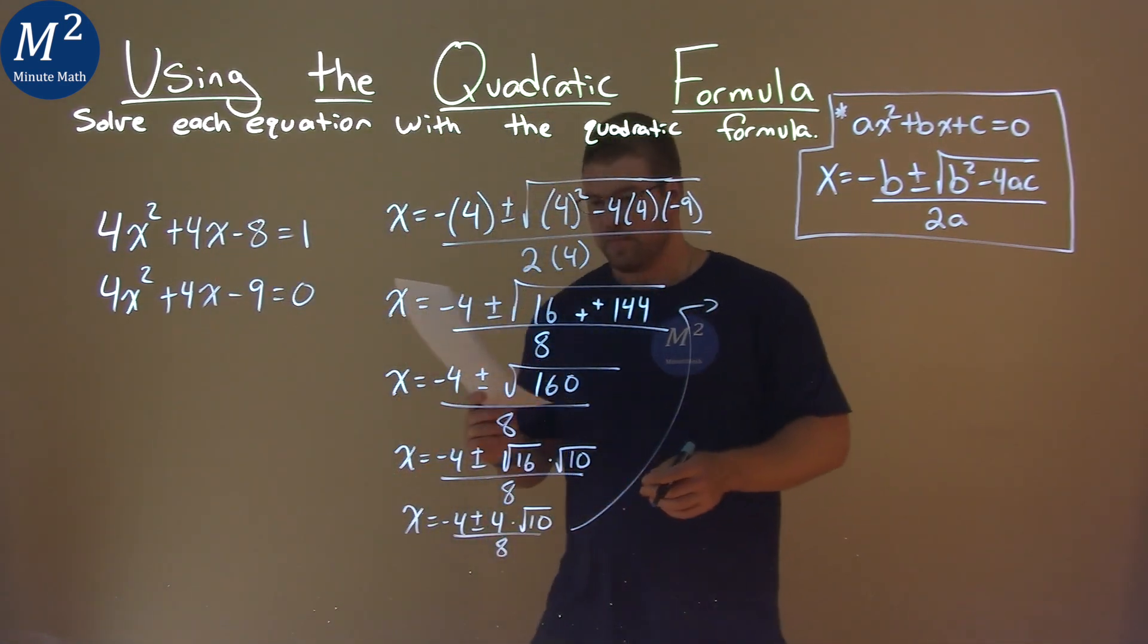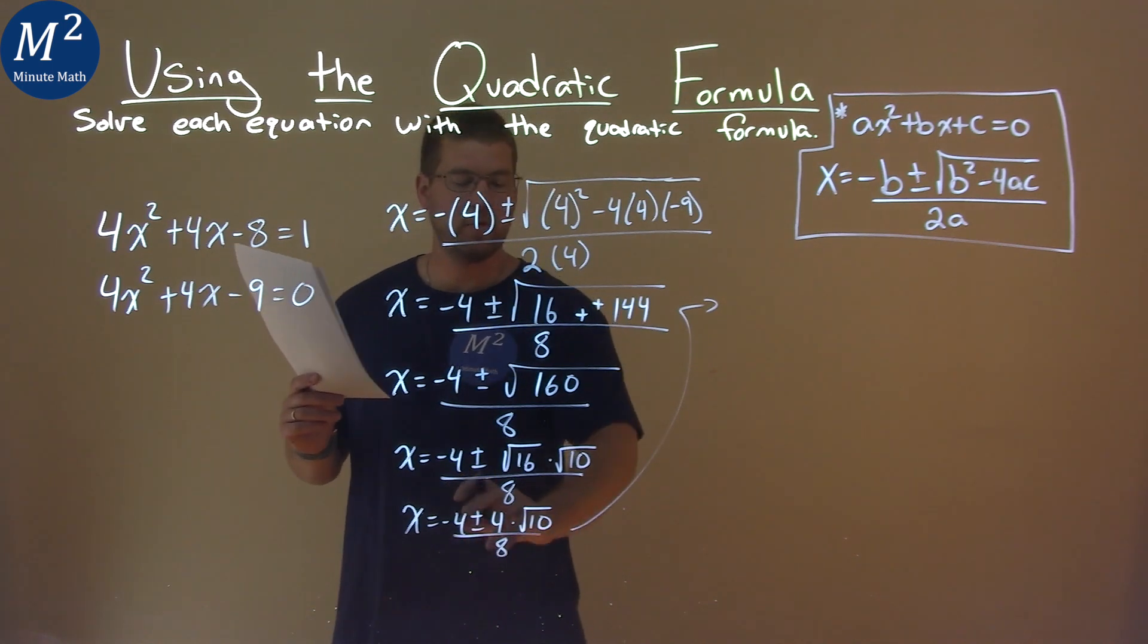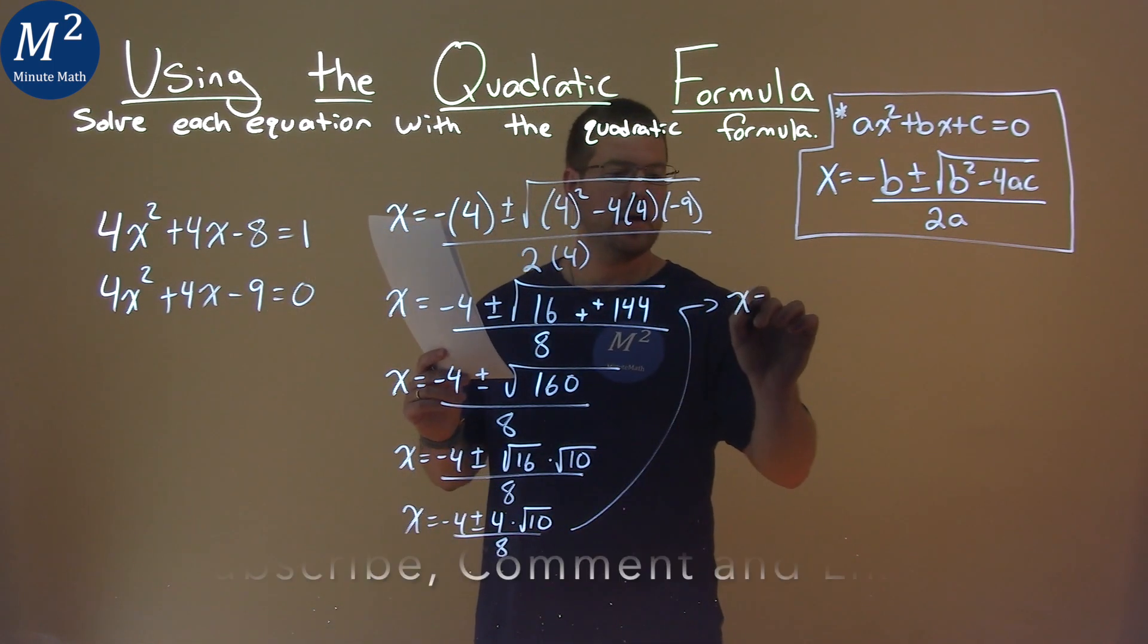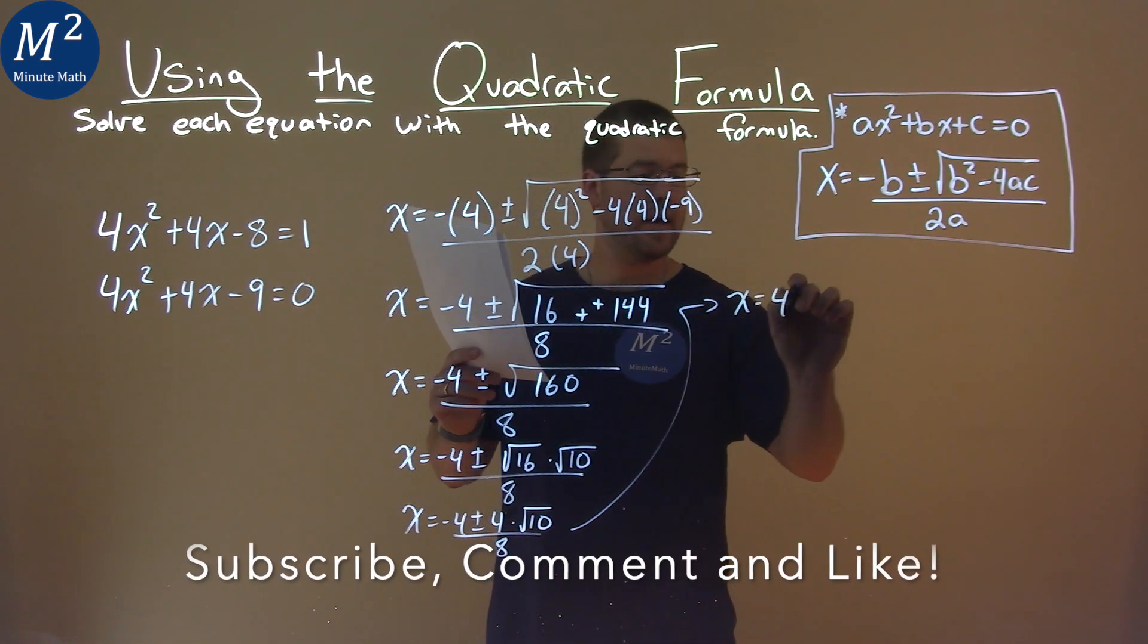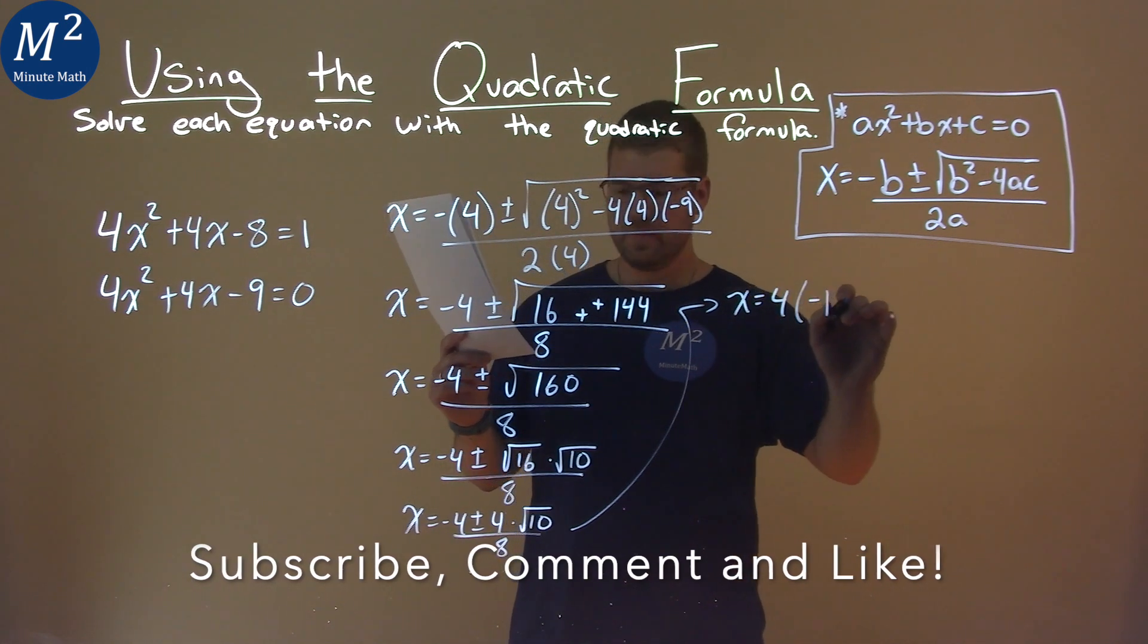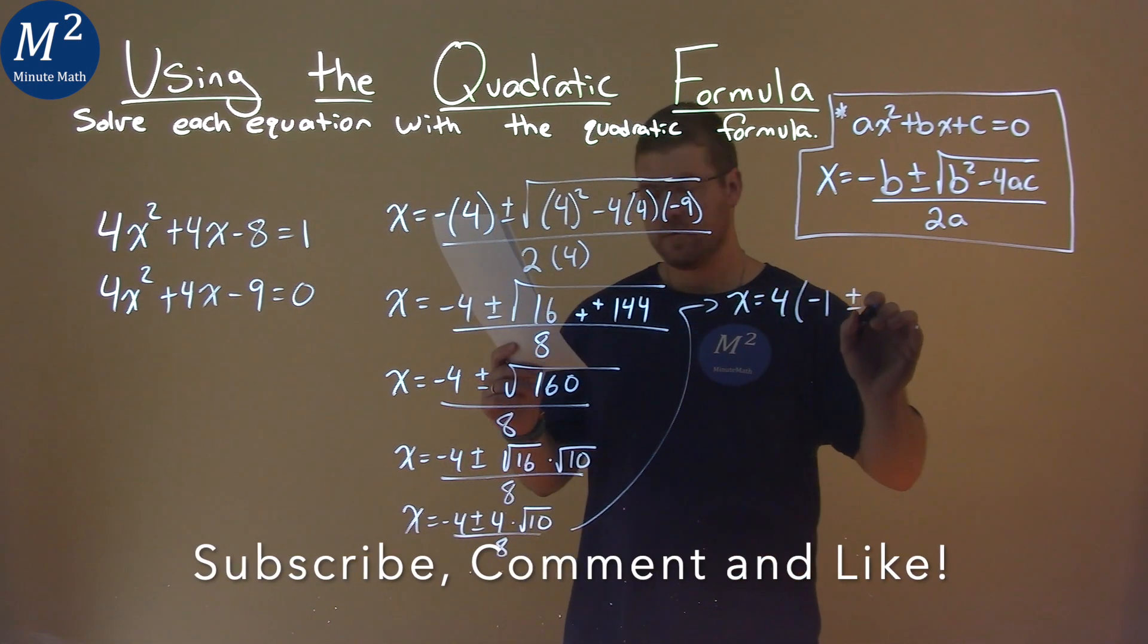Let's keep breaking this down. The numerator has a 4 in both parts, so we can pull that out. We have x equals 4 now times negative 1 plus or minus square root of 10,